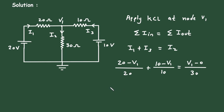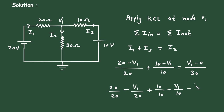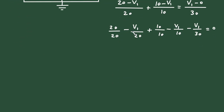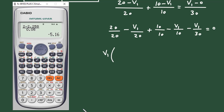Simplifying: 20/20 minus V1/20 plus 10/10 minus V1/10 equals V1/30. Taking all V1 terms to the left side, we get minus V1/30 equal to 0. Taking V1 common in bracket: minus 1/20 minus 1/10 minus 1/30.